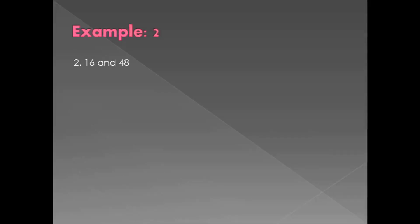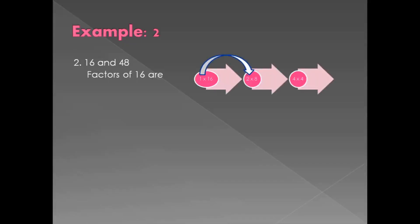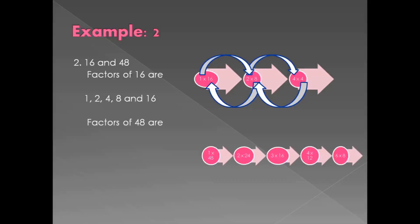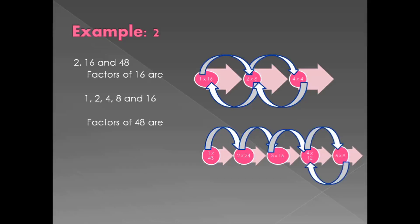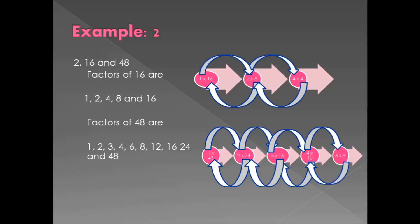Let's take one more example to make it very clear. Example two: find the HCF of 16 and 48. The factors of 16 are 1, 2, 4, 8, and 16. The factors of 48 are 1, 2, 3, 4, 6, 8, 12, 16, 24, and 48. Looking at the common factors, the highest common factor is 16. So the HCF of 16 and 48 is 16.